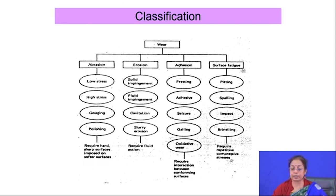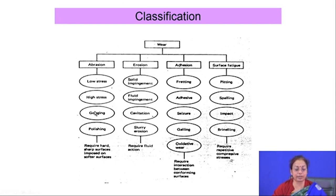These are the four important basic categories of wear. There are several subcategories under each category. Under abrasion: low stress abrasion, high stress abrasion, gouging wear, and polishing wear. Under erosion: solid impingement, fluid impingement, cavitation wear, and slurry erosion.